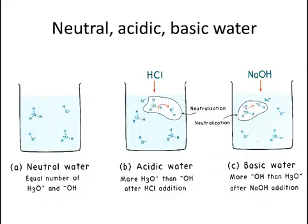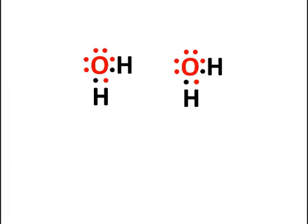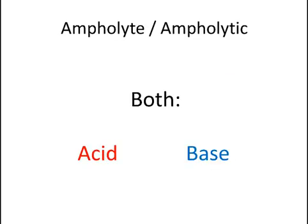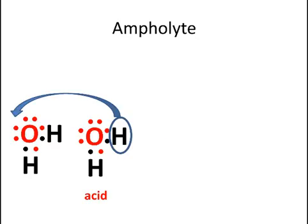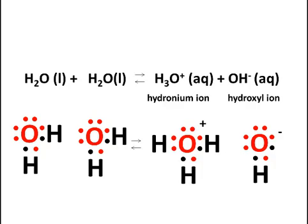How can we understand neutral, acidic, and basic solutions? Here we have some water that is neutral. Water consists of H₂O molecules which react with one another. Water can act both as an acid or as a base — we call it an ampholyte or ampholytic substance because it can act as both an acid and a base. As it reacts as an acid, it donates protons to the base which accepts those protons, giving us hydroxyl ions and hydronium ions.